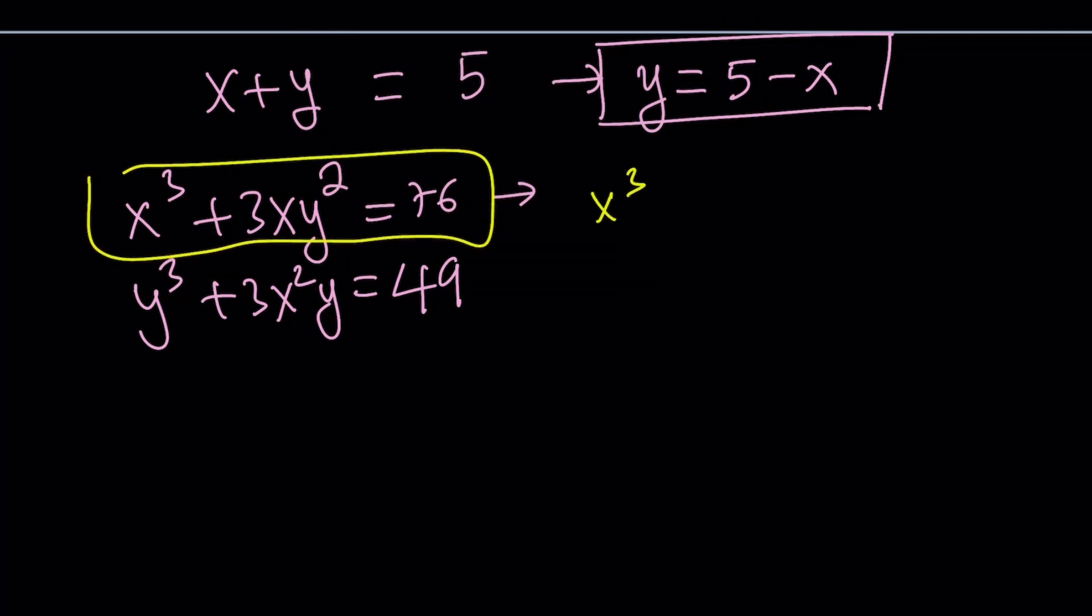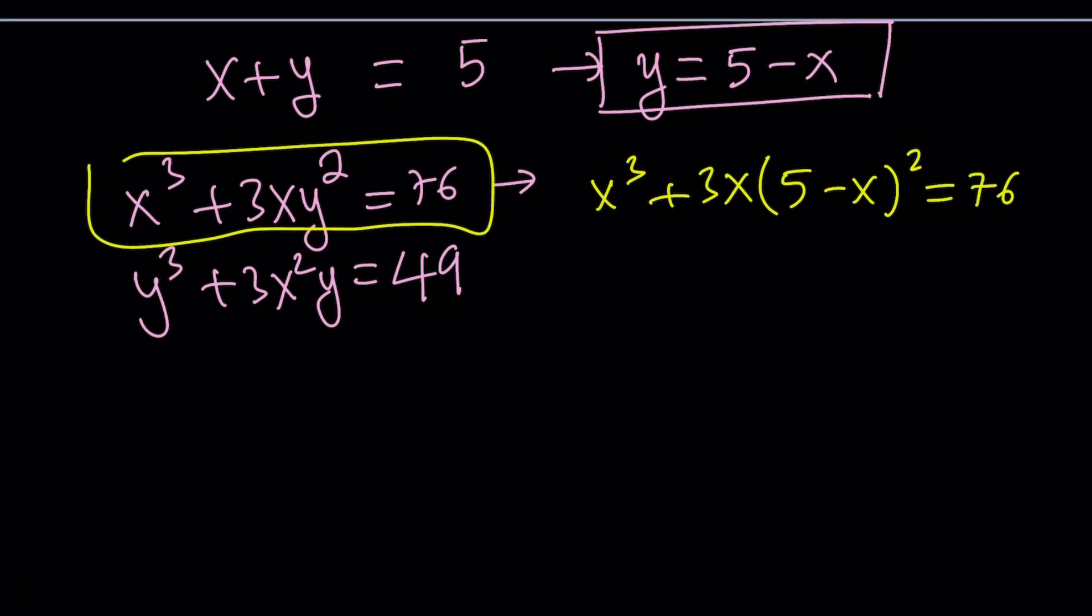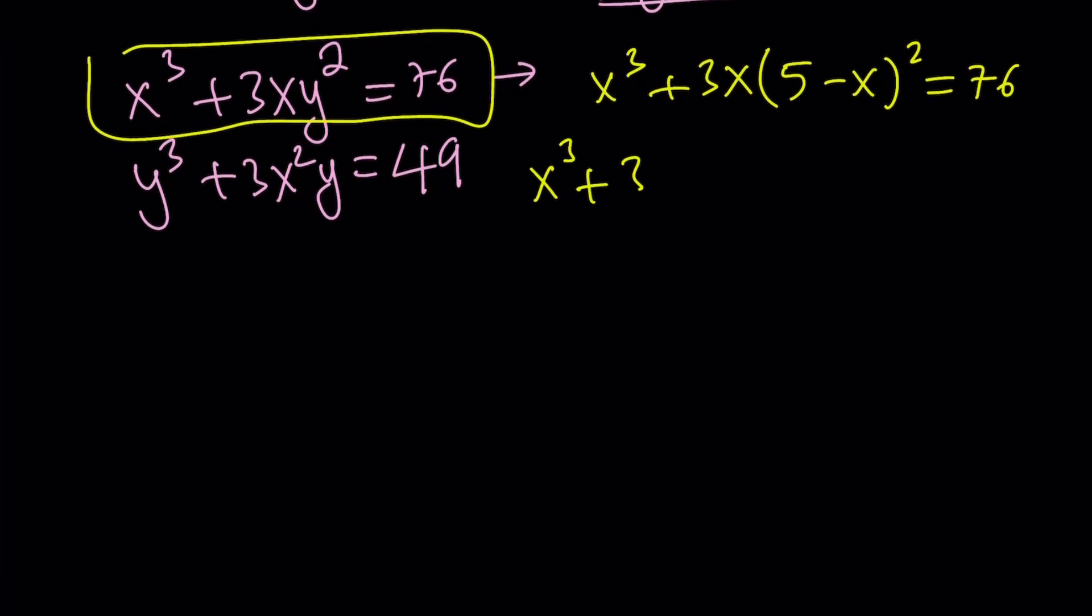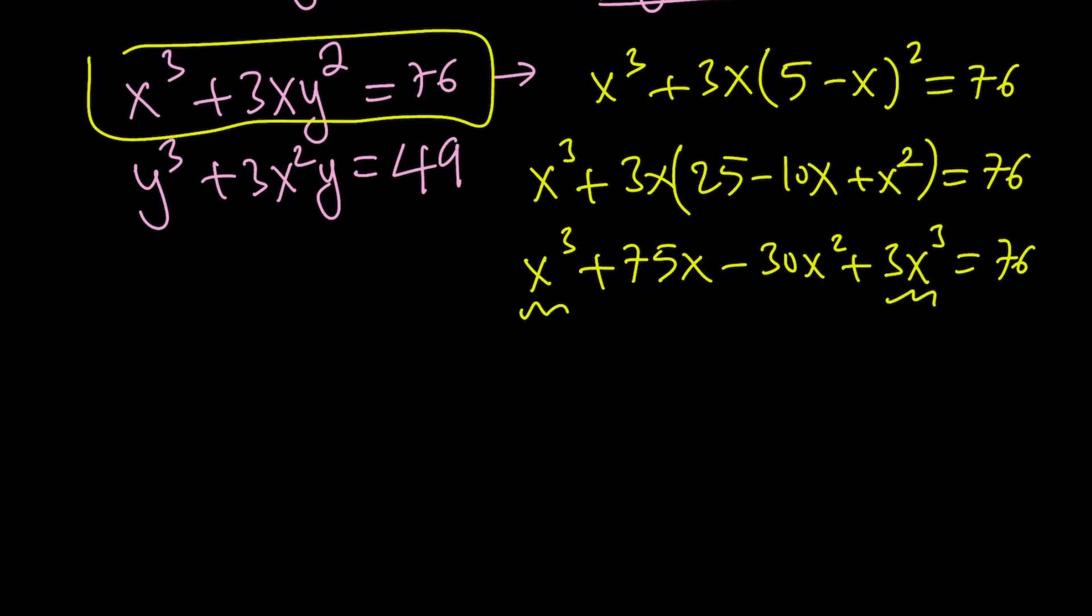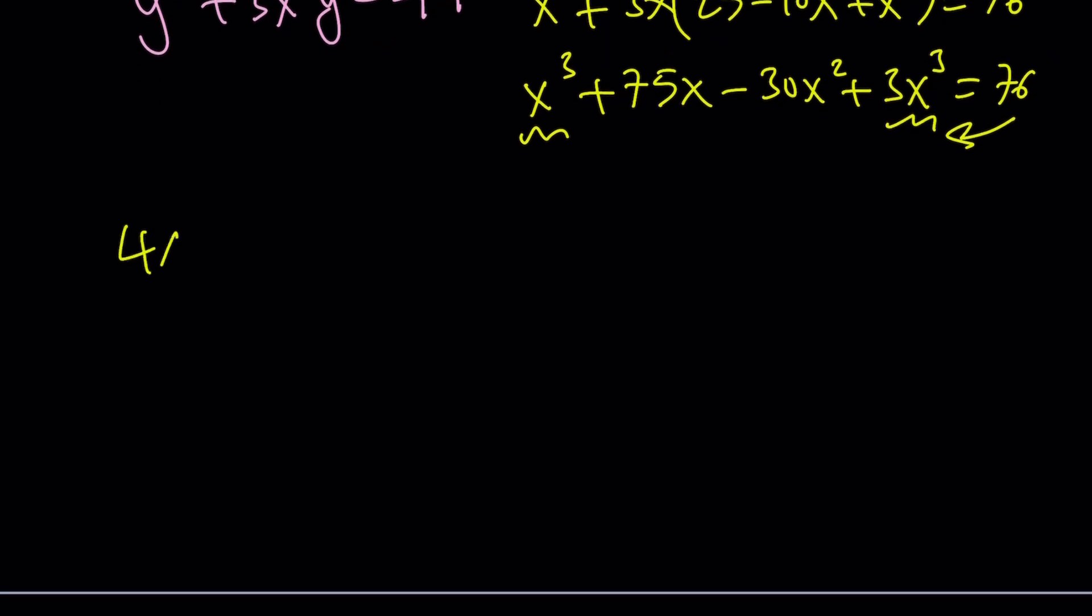We're going to replace y with 5 minus x. So we have to square it and then set the whole thing equal to 76. Let's go ahead and expand everything. We get x cubed plus 3x times 25 minus 10x plus x squared equals 76. And then let's go ahead and distribute x cubed plus 75x minus 30x squared plus 3x cubed equals 76. And now let's go ahead and combine like terms and put everything on the same side, subtracting 76 from both sides.